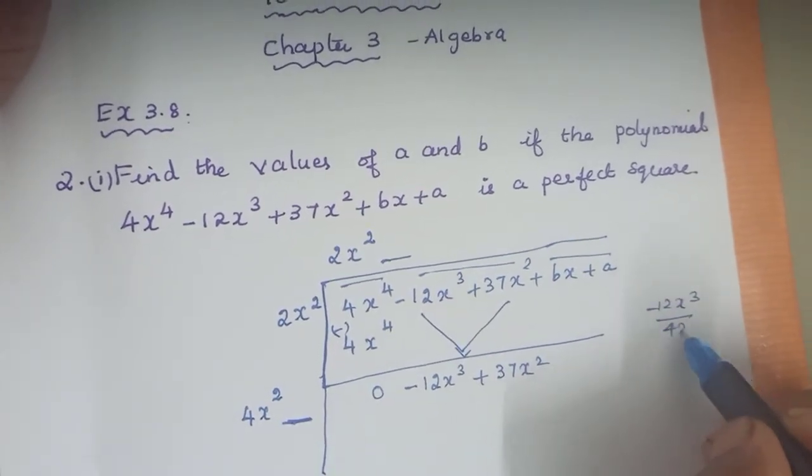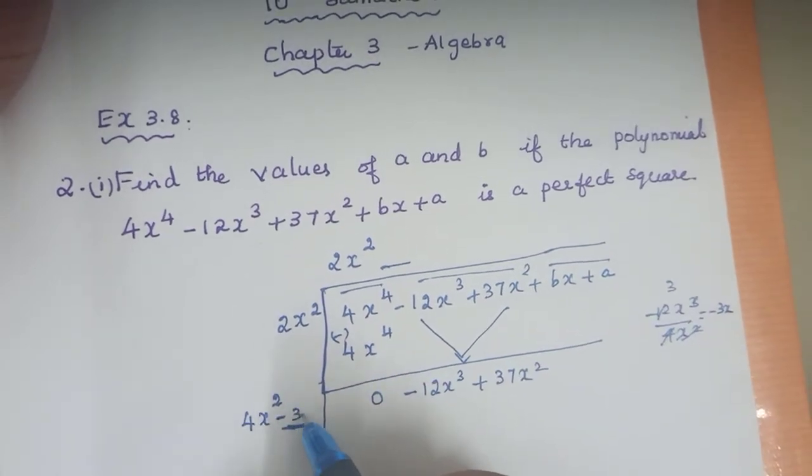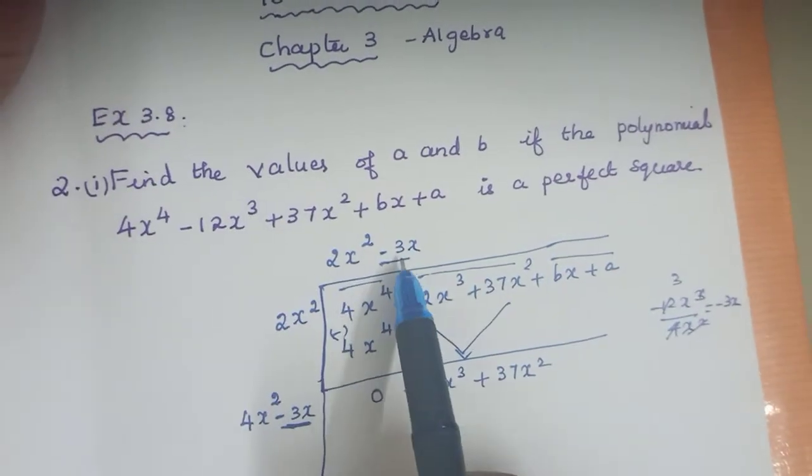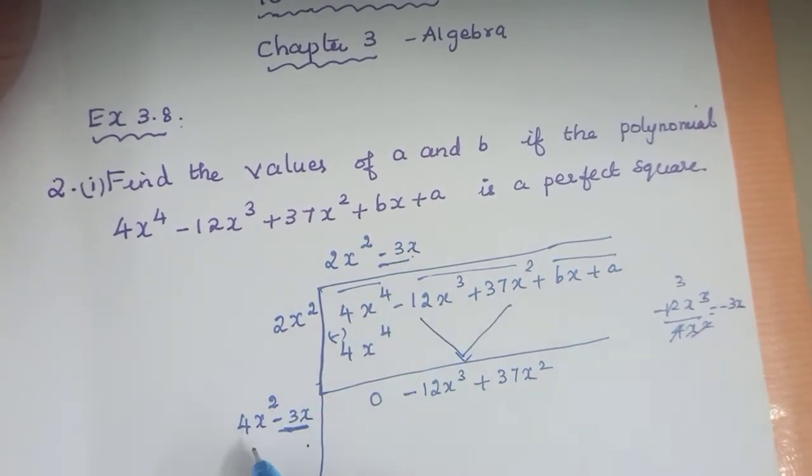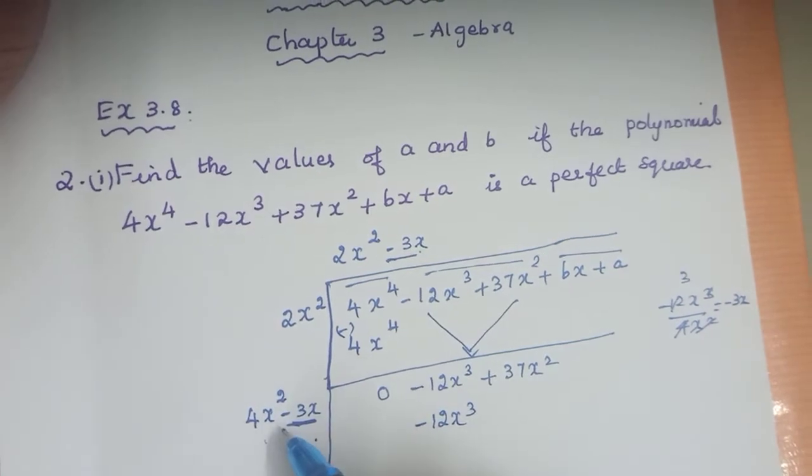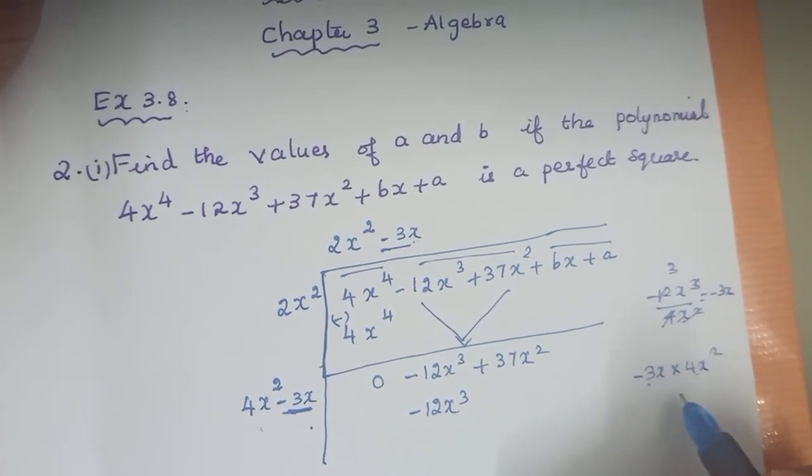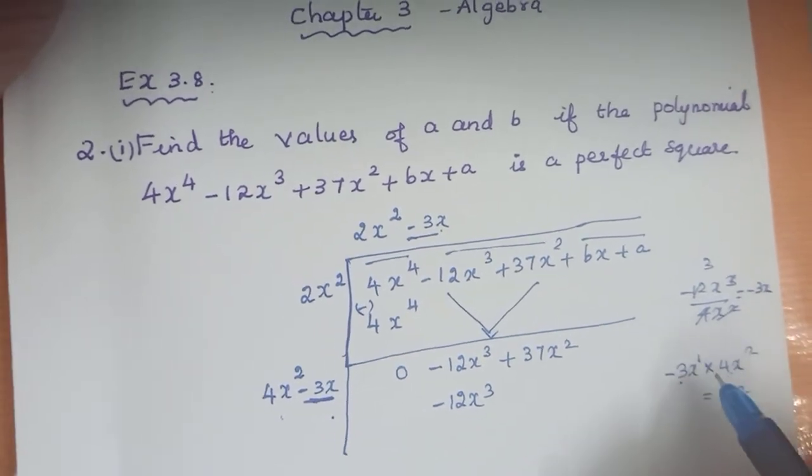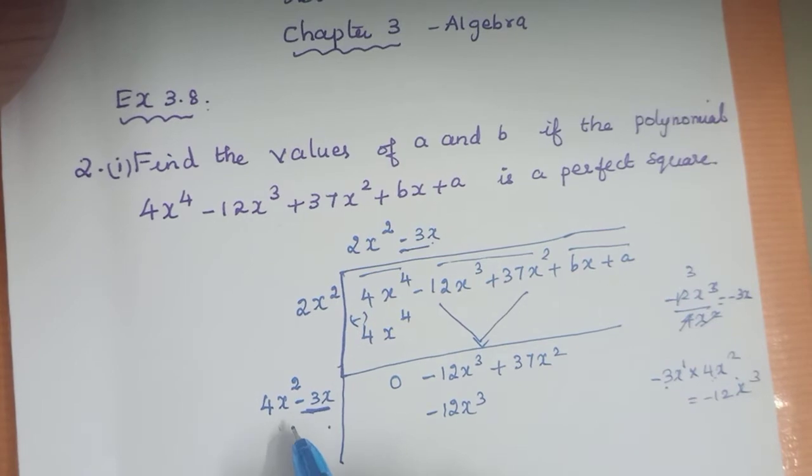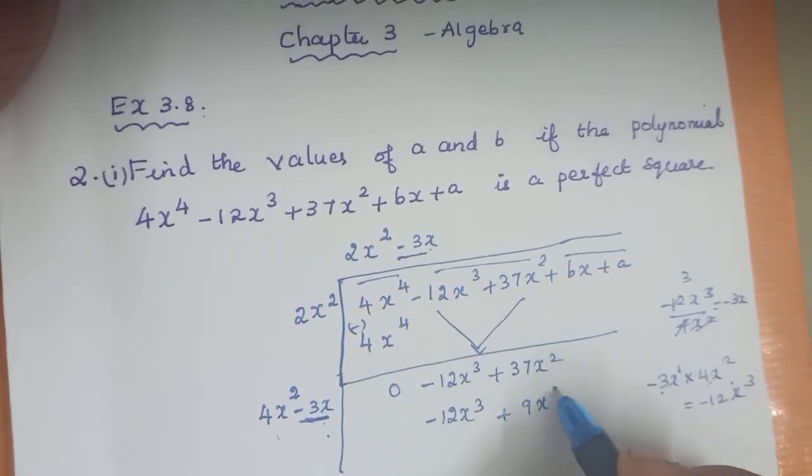First term is minus 12x cube. Here first term is 4x square. If you divide, you get minus 3x. This minus 3x will be the second term. Minus 3x into 4x square gives minus 12x cube. Minus 3x into minus 3x gives plus 9x square.